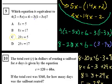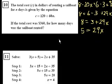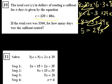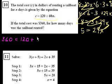Next question, problem number 10. The total cost C in dollars of renting a sailboat for n days is given by this equation. If the total cost was $360, for how many days was the sailboat rented? So they're giving us C — C is $360. So that's going to be equal to 120 plus 60 times the total days rented, times 60n. And that's what they want us to figure out — n, how many days was the sailboat rented?